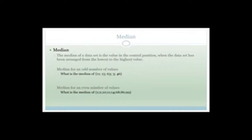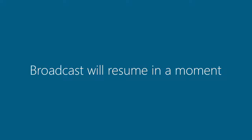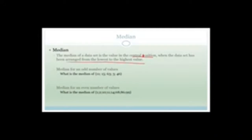The median of a data set is the value at the central position when the data set has been arranged from the lowest to the highest. In other words, this would be the same as if you got all your classmates to stand in a row from shortest to tallest, and then you chose the middle height — the person in the middle. There are two different ways to handle medians, and it depends on whether you've got an odd or even number of values.